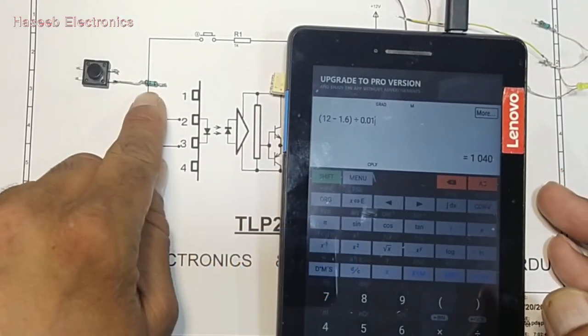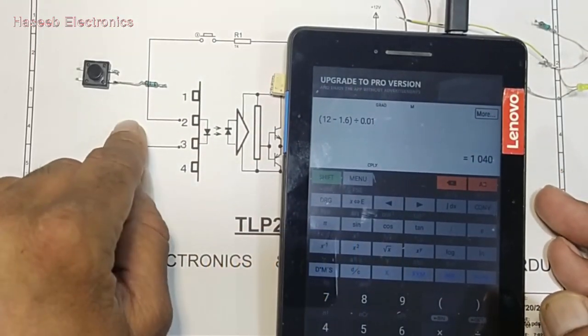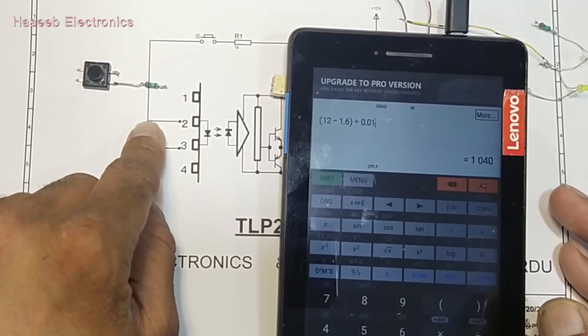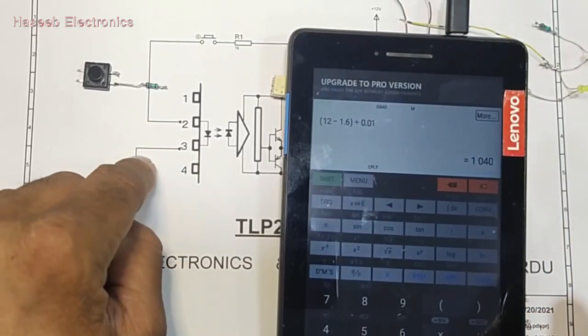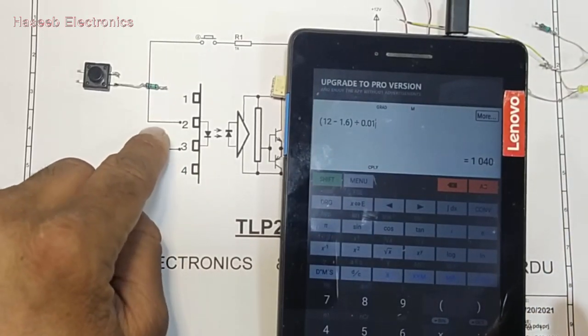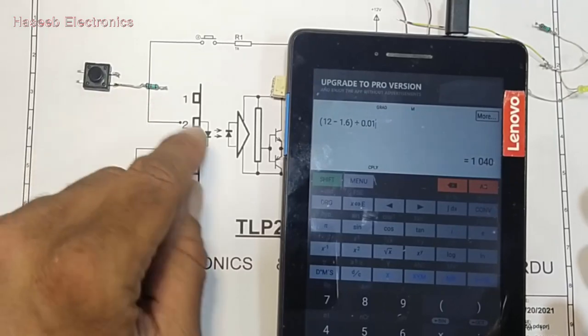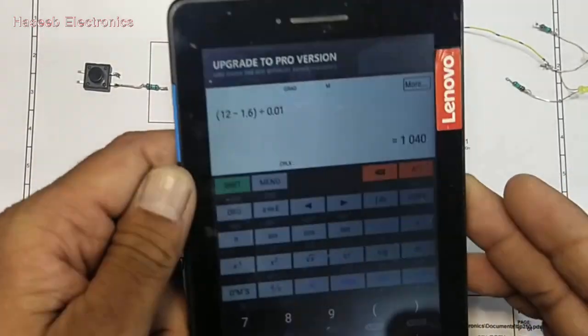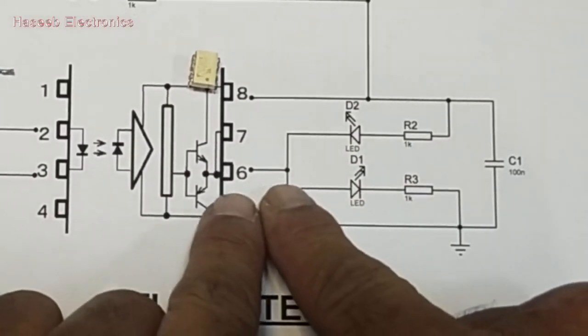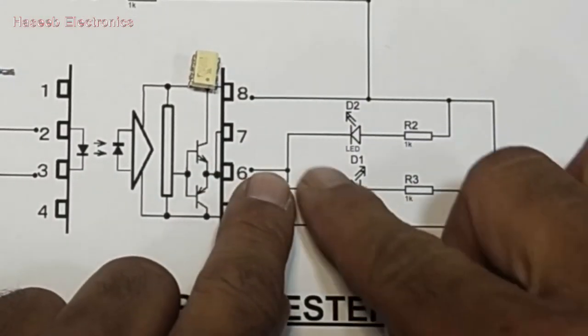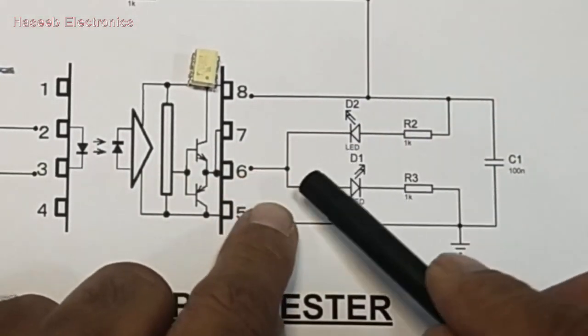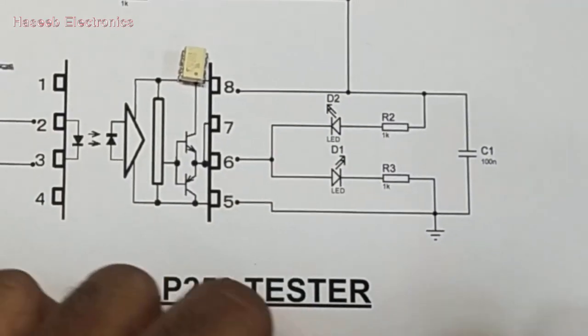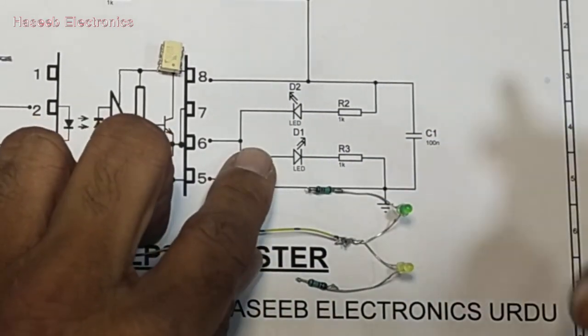Maximum is 20mA absolute maximum rating. Normally we can apply 8 to 10mA, so I will select 1K resistor here. We need two LEDs. We will connect LEDs at pin number 6 - one LED cathode, second LED anode, combined together.